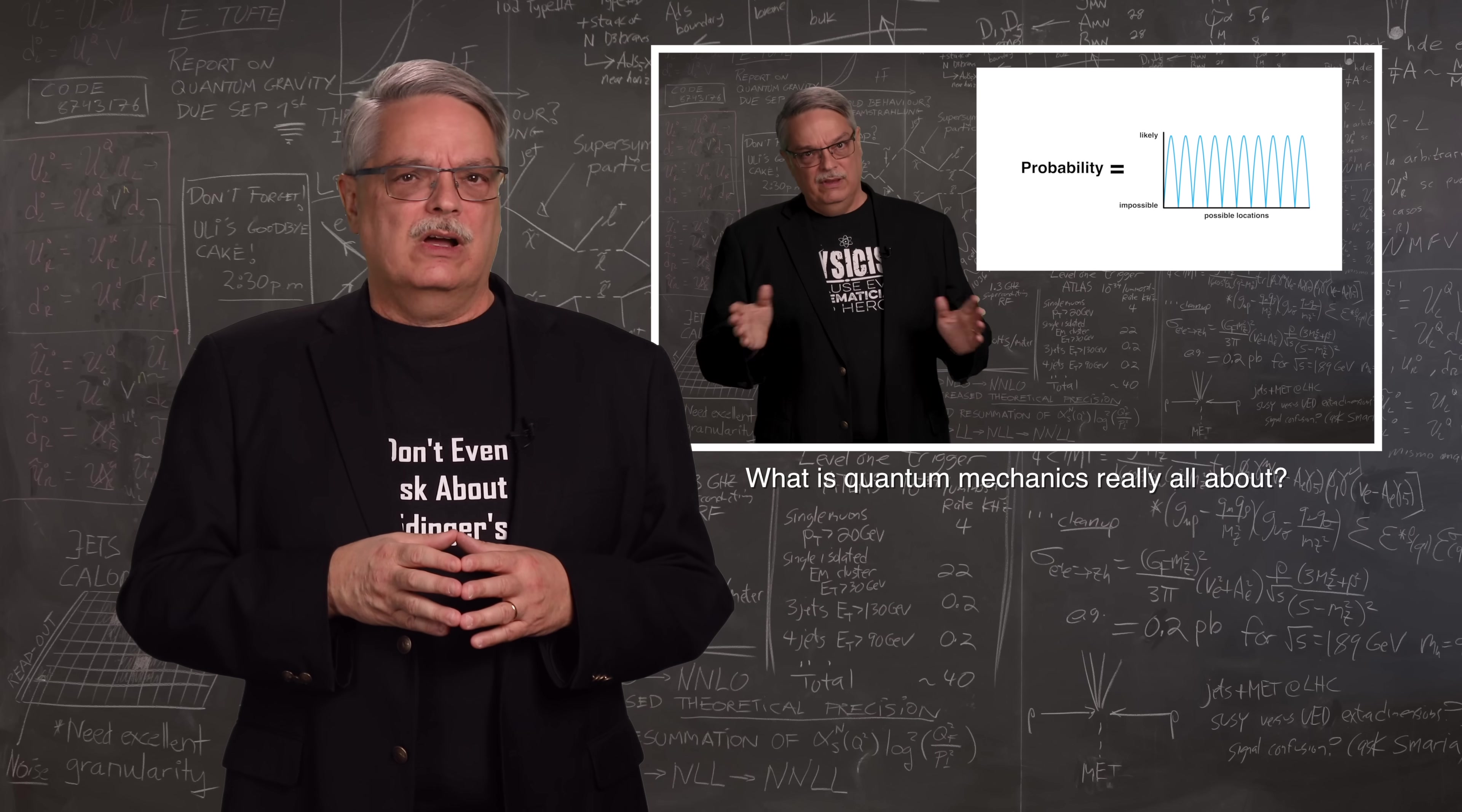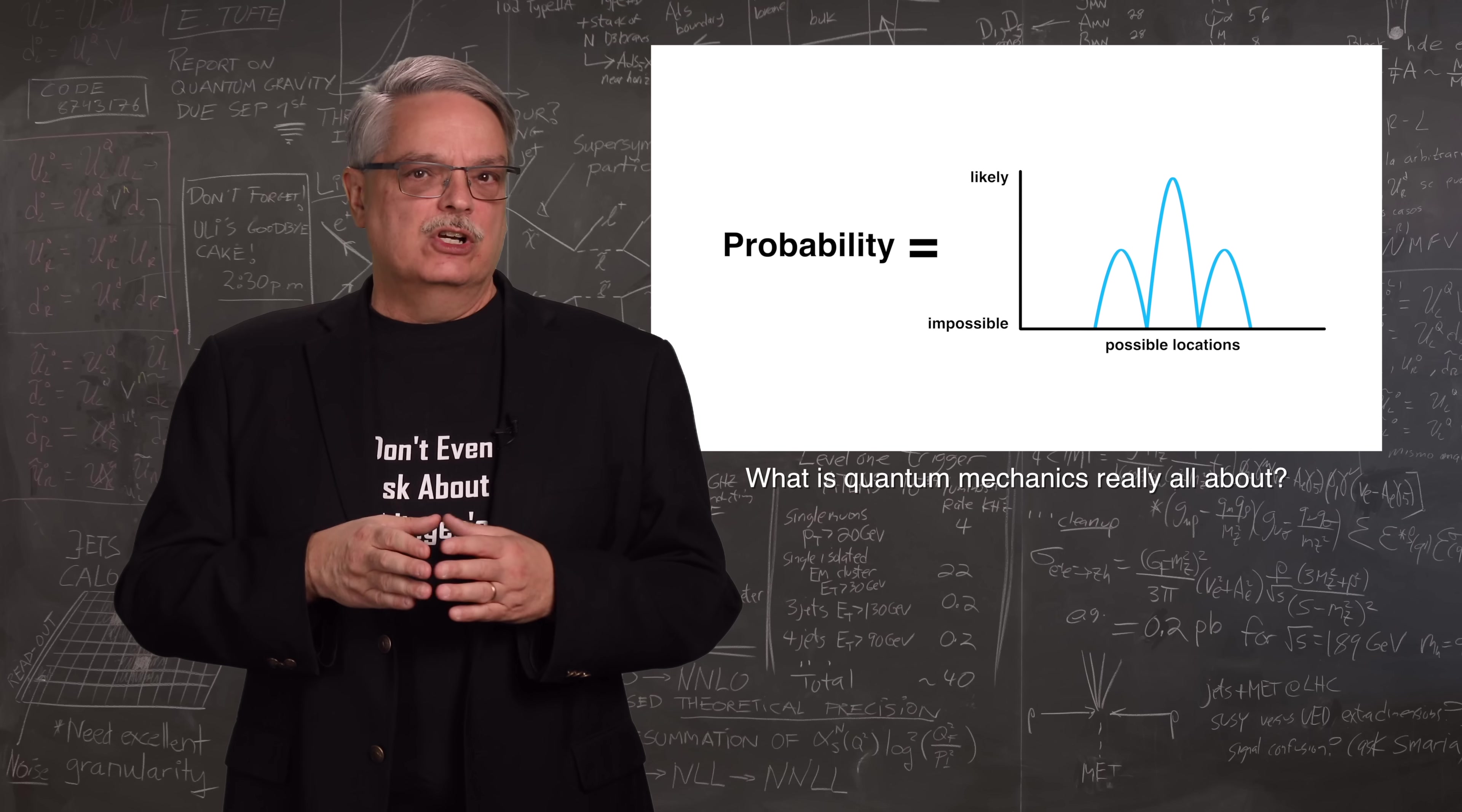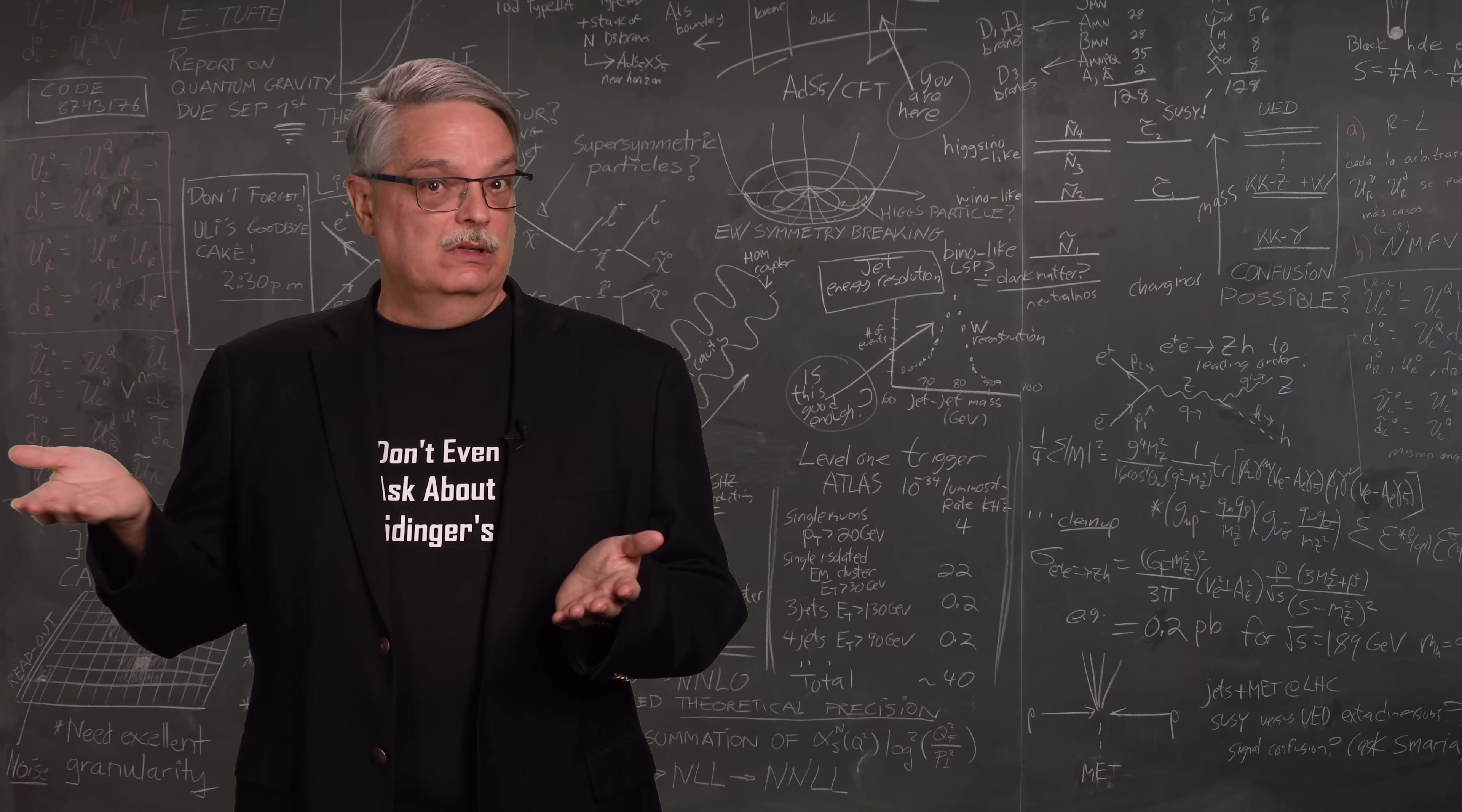In an earlier video, I talked about how the behavior of a subatomic particle, like a photon or an electron, is described by what is called a wave function. Brushing over many details, the wave function governs the probability that you will find the particle in a particular configuration. Before you make a measurement, you can't know, even in principle, what configuration the particle is in.